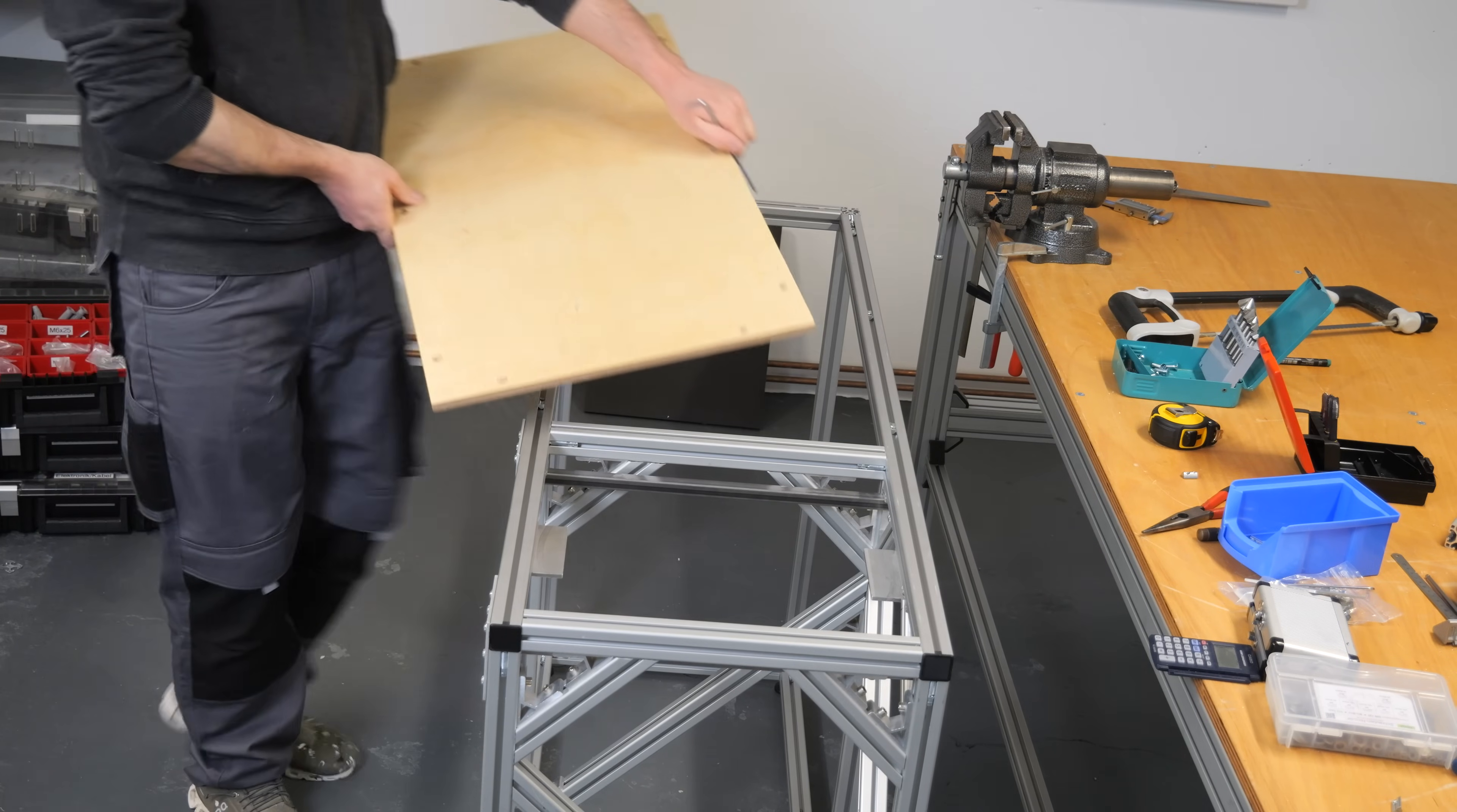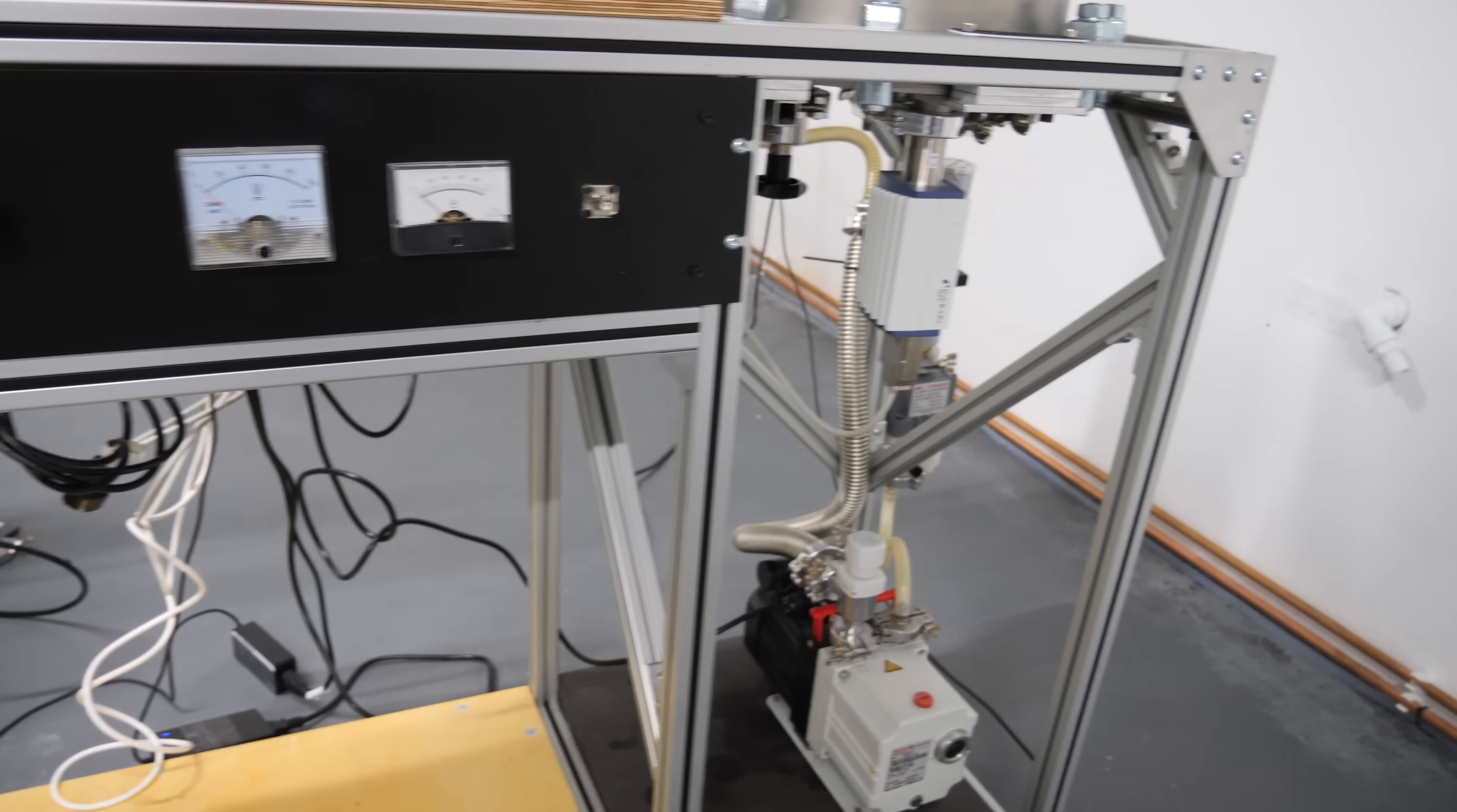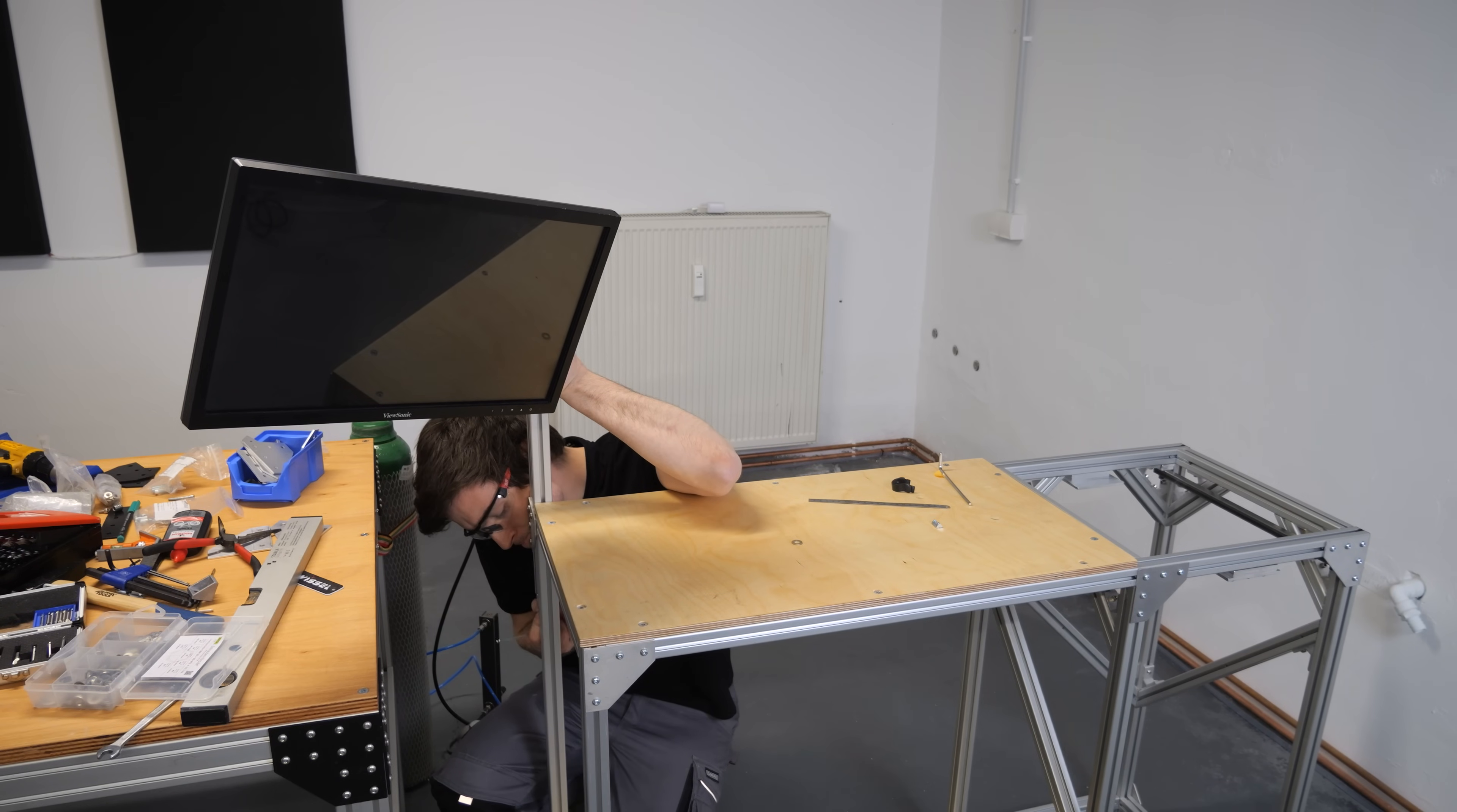And since I am already getting a new pump for the vacuum chamber, I thought I would also expand the table for the chamber while I am at it. This allows me to mount additional devices such as the power supply for the magnetron directly to the table. I have also attached a monitor that will in the future display important process parameters such as the pressure and the status of the turbo molecular pump.